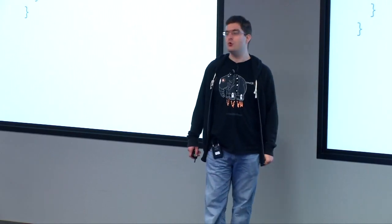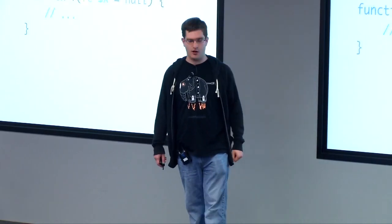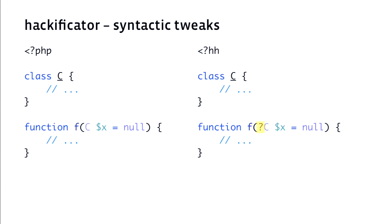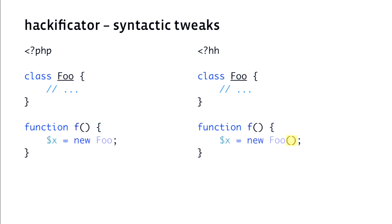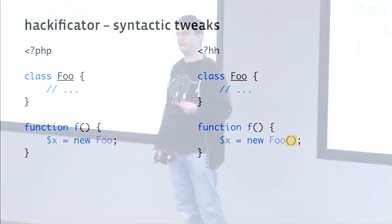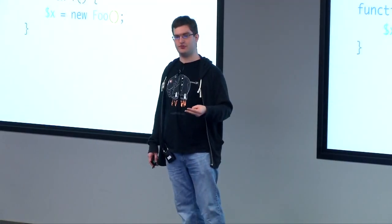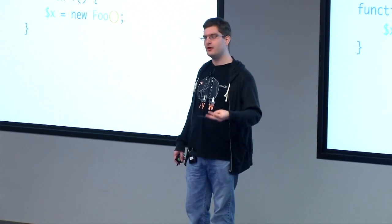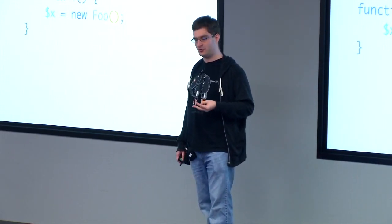The Hackificator, along with changing the headers, will make a couple of other small syntactic tweaks. It will add a nullable annotation on the type if you gave a null default value — PHP indicates nullable with a null default, while Hack has a specific nullable type, and we'll add that for you. We'll also supply a missing constructor argument list if you don't have one, since Hack enforces argument lists everywhere for consistency. That's all the Hackificator does: it changes the headers, adds nullable type annotations, and adds empty constructor argument lists where needed. It's a very simple tool.